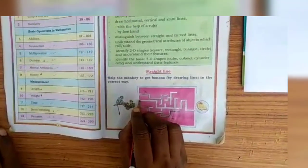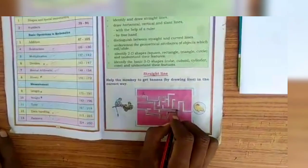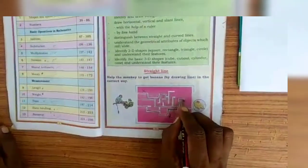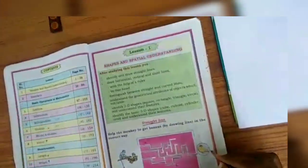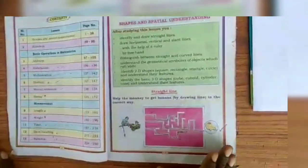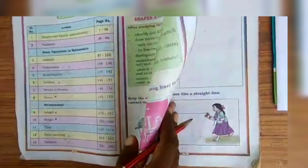Next, you should try the second line. So, the second one is the correct way for the monkey to get the banana.